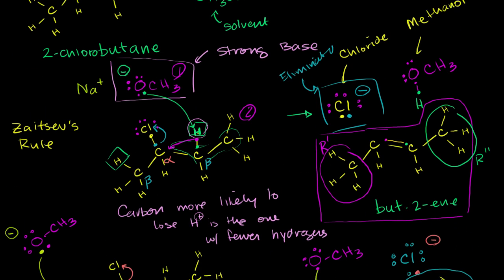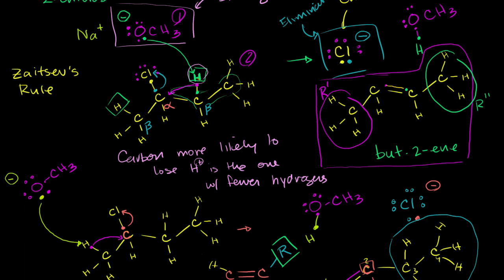Hopefully you at least get Zaitsev's rule — hyperconjugation is a deeper concept and the jury's still out on it as the explanation for why Zaitsev's rule works. But the rule itself is pretty straightforward: if you're trying to pick between two beta carbons, the one that's going to lose the hydrogen is the one that already has fewer hydrogens — or the one that's bonded to more carbons. And this is true not just in E2 reactions, but equally in E1 reactions.